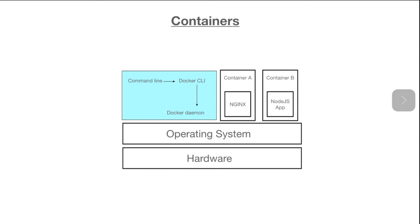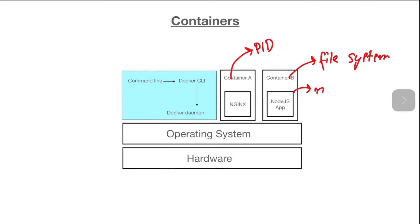A container is a running instance of a particular image. When we run a particular container, multiple processes are happening: we allocate PIDs to the processes running inside the container, we allocate a file system to the container, and we also create a network interface for the container. All these things are done using the namespace feature of the operating system. For example, the PID namespace is used for allocating PIDs to the processes inside the container. Any process running inside the container will not be able to see anything outside the container — they can't see the file system of the host operating system or the content of any of the other containers.